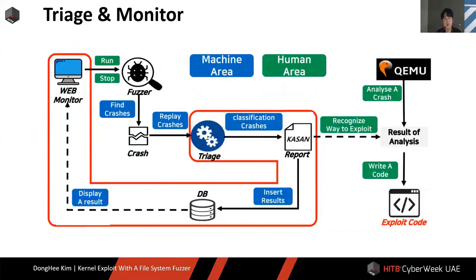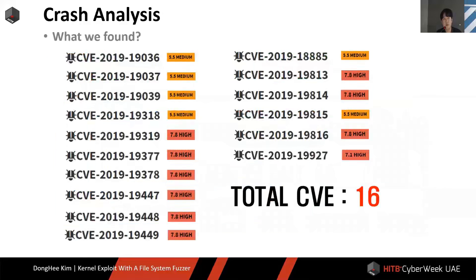This is the overall structure of the triager and monitor. The blue part is the automated flow, and the green part is where we analyze our exploit code. When the fuzzer finds a crash, it goes through the triager and saves the KASAN report to the database, which can be managed efficiently through the monitor. We download the image from the monitor and reproduce it with QEMU, then analyze the KASAN report and load the exploit code.